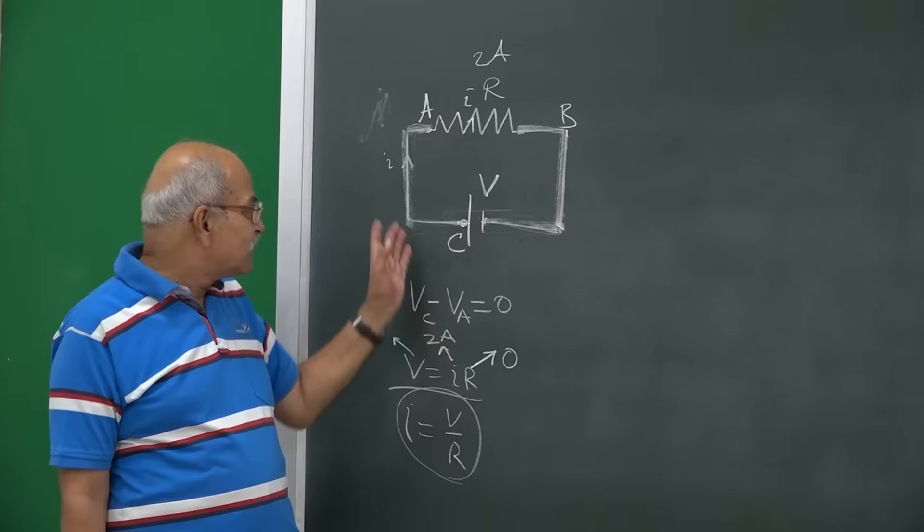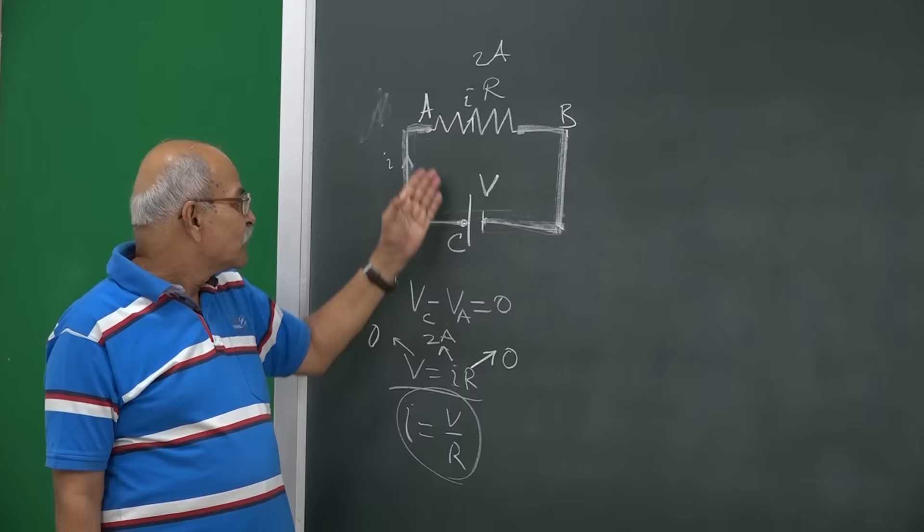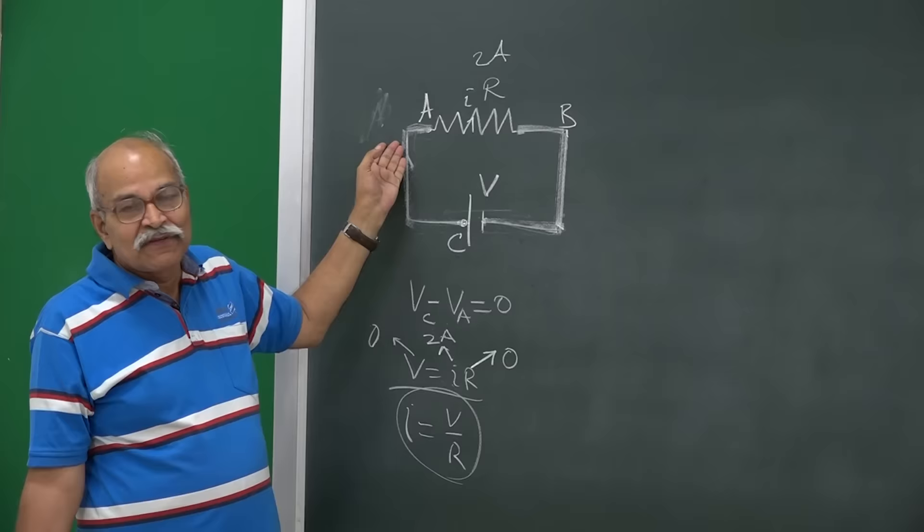The resistance is 0 here to here, potential difference is 0 here and then there is a current of 2 amperes, perfectly alright. You will change the resistance here or change the battery here,